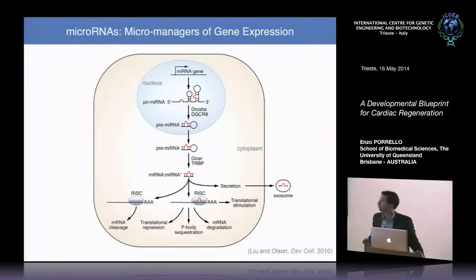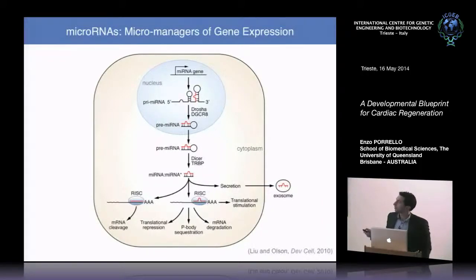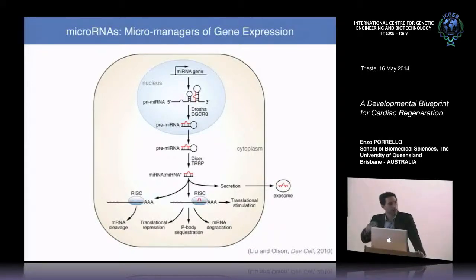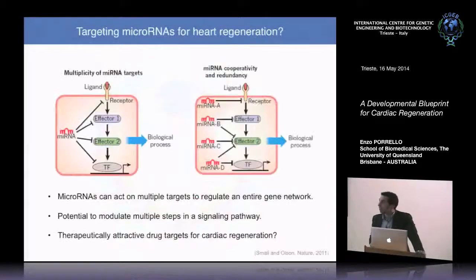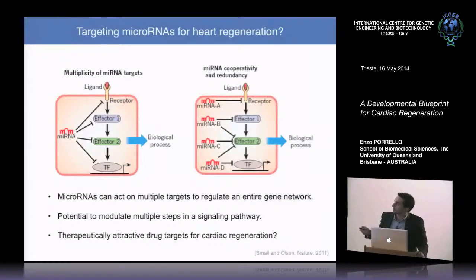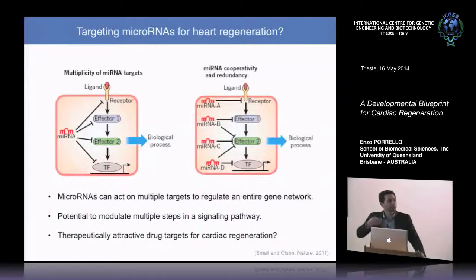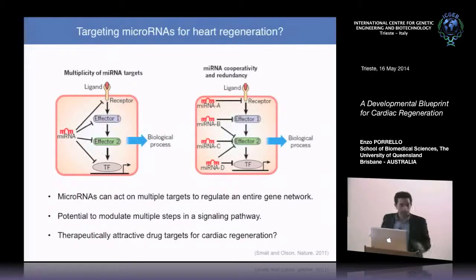MicroRNAs are small non-protein-coding RNAs transcribed as long precursors, cleaved by Drosha and Dicer to generate miRNA duplexes. One strand is loaded into the RNA-induced silencing complex and interacts with messenger RNAs to regulate transcription and translation through mRNA degradation or translational repression. A single microRNA can have many downstream target genes co-localized within a common signaling pathway, acting at multiple steps to regulate entire gene networks — making them therapeutically attractive targets.